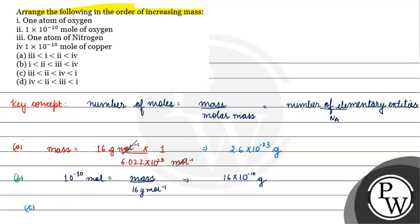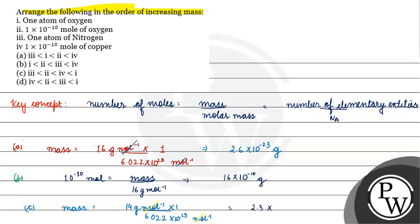For 1 atom of nitrogen, the mass will be approximately 2.3×10⁻²³ grams.